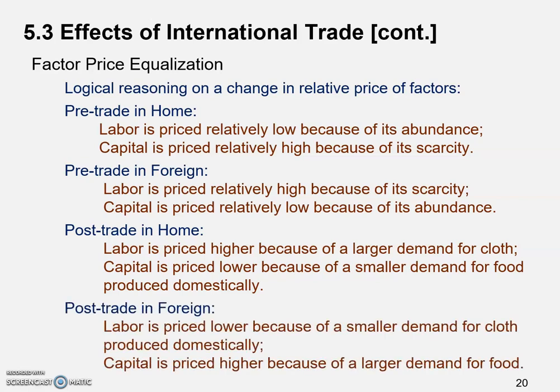Post-trade in Foreign, labor is priced lower because of the smaller demand for cloth produced domestically in Foreign — they simply import cloth from Home. So the cloth industry in Foreign shrinks, its demand for labor goes down, and the wage will go down as a result. Capital is priced higher because they are exporting food and need more capital, so higher demand leads to a higher capital or rental price.